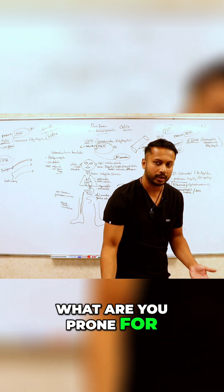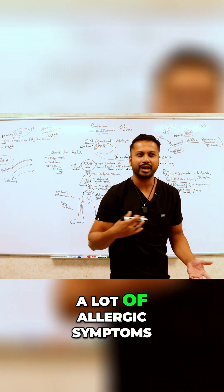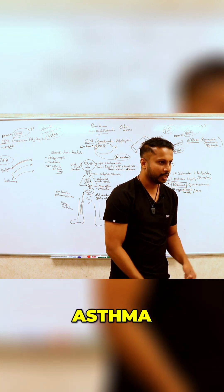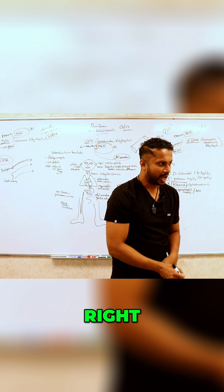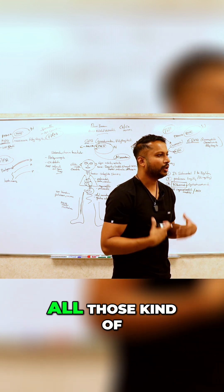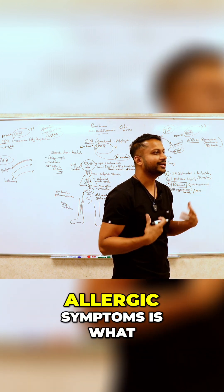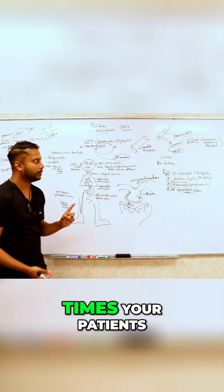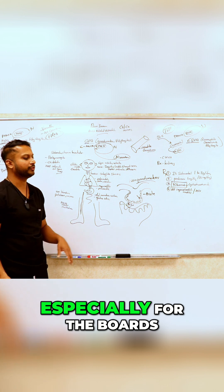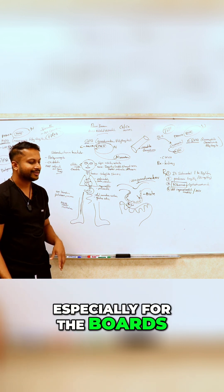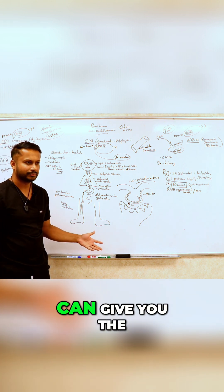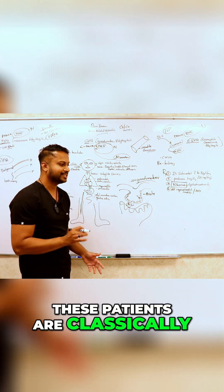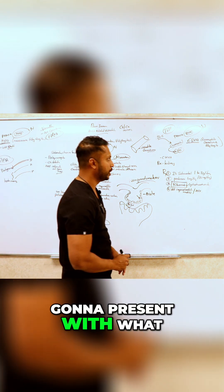So if you have too many eosinophils in your body, what's going to happen? You are prone for a lot of allergic symptoms — asthma, atopy, hives, all those kinds of allergic symptoms. And a lot of times your patients, especially for the boards, are classically going to present with these features.